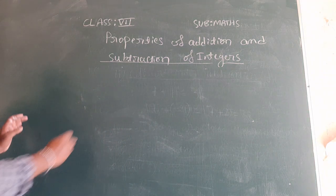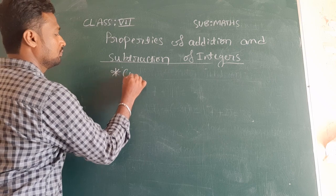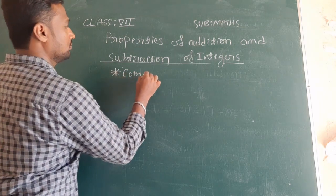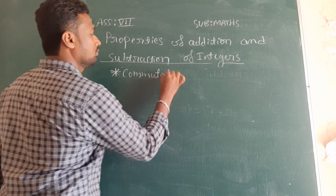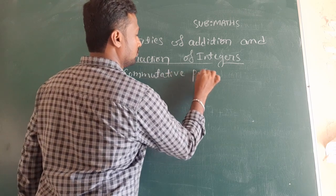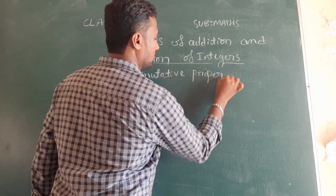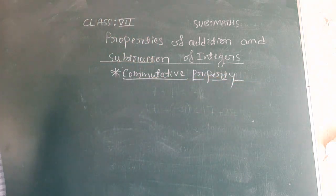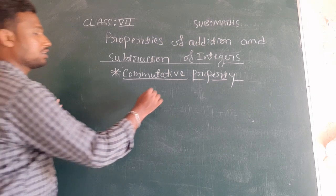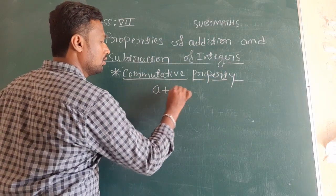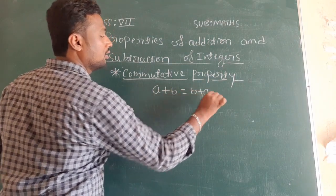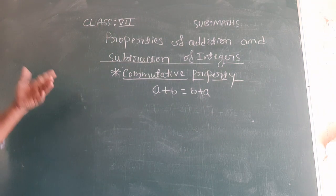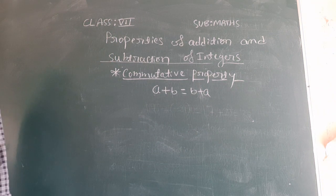Now we will discuss the next property, that is commutative property. What it means: commutative property means a plus b should be equal to b plus a. In reverse order also we should get the same answer. First we will check this commutative property for addition.